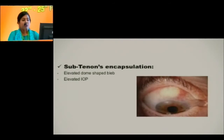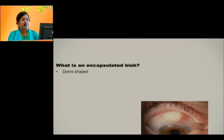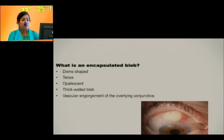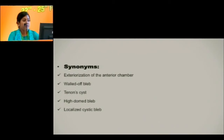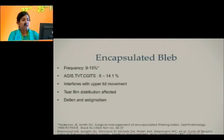The subject proper — Tenon's encapsulation — is a dome-shaped bleb which is tense, opalescent, thick-walled, with vascular engorgement of the overlying conjunctiva. It can happen anywhere within the first six months post-surgery and is classified as type 4 per Hitchings and Migdal classification. Synonyms include: exteriorization of the anterior chamber, walled-off bleb, Tenon's cyst, high-domed bleb, or localized cystic bleb.